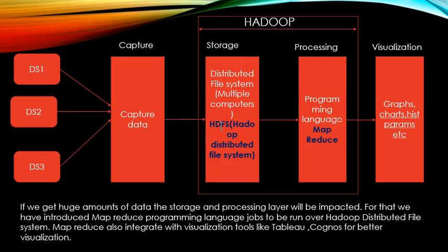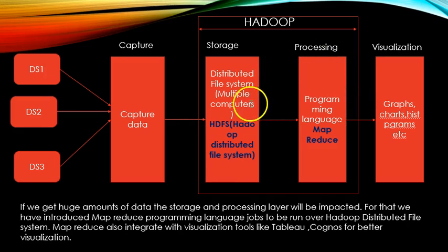In the case of Hadoop, we introduce a new programming language called MapReduce and a new distributed file system called Hadoop Distributed File System (HDFS). When we get huge amounts of data, the storage and processing layers get impacted. To address this, we have implemented these two technologies. MapReduce programming jobs are run over HDFS.